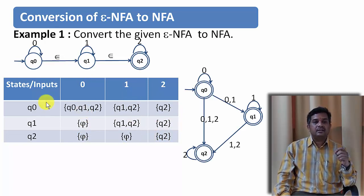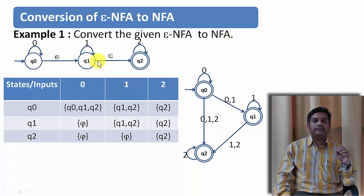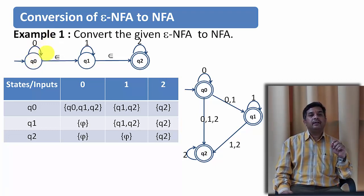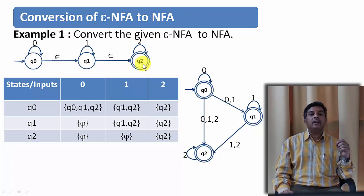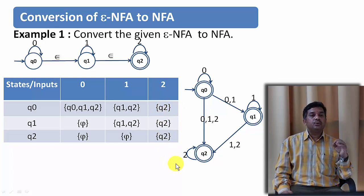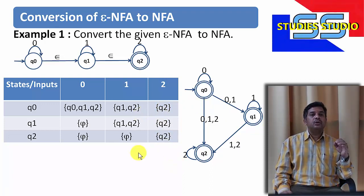If we draw the transition table based on this, we get the corresponding NFA. Now regarding the final states of this NFA: Q2 is the final state in the Epsilon NFA. We check from which states we can reach Q2 via Epsilon transitions — i.e., for which states does the Epsilon closure contain Q2. From Q0 on Epsilon transition you can reach Q2, and from Q1 on Epsilon transition you can also reach Q2. So Q0, Q1, and Q2 all become final states in the resulting NFA.